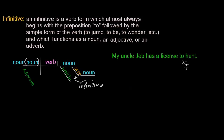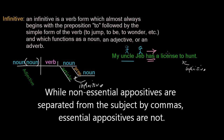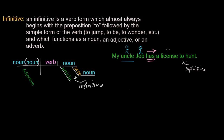Our main verb is a form of the verb to have — has in this case. It's a transitive verb, because we will have an object: license. For our subject, we ask who or what has, and my uncle has — so that's our subject. It looks like we have two subjects here, but Jeb is actually functioning as an appositive, an essential appositive, and essential appositives don't separate them from the subject with commas. License is going to be our direct object, and hunt is the object of the preposition to, which is really an infinitive. And we have an adjective: my — whose uncle? My uncle.